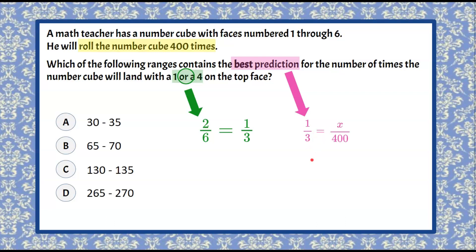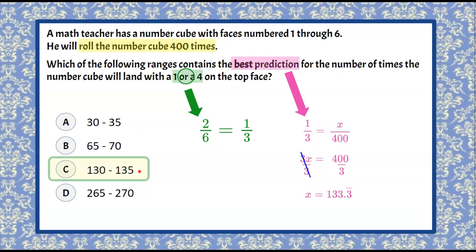3 times x is 3x. 1 times 400 is 400. To solve for x, we're going to divide each side of this equation by 3. 3 divided by 3 is 1, leaving us x. And 400 divided by 3, using your calculator, is 133.3 repeating.